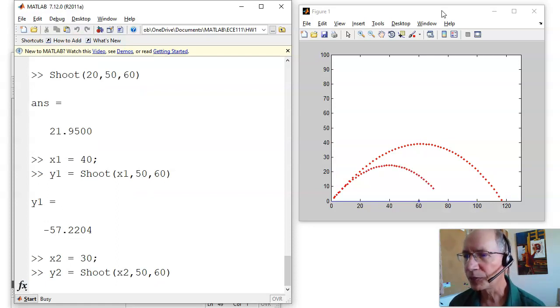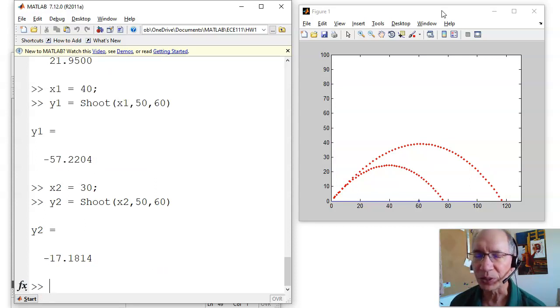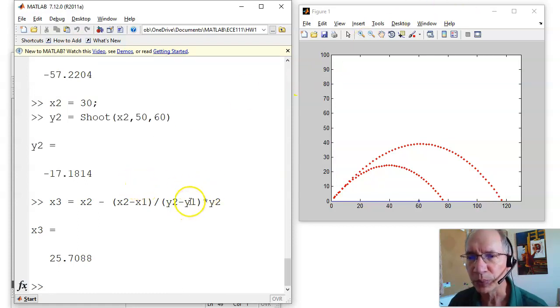Once you have two guesses, if a third shot from the howitzer misses you, they're toying with you. The third one will nail you if they're really trying. The third guess is based upon the previous two guesses. x2 minus the slope, (x2-x1)/(y2-y1) times y2.